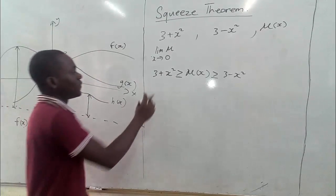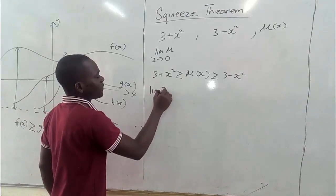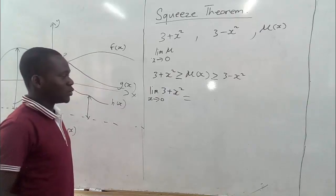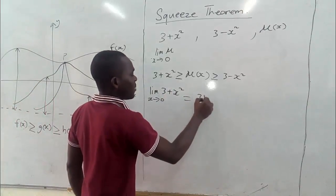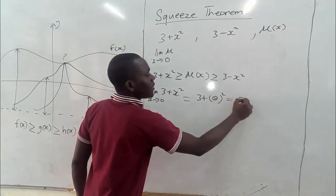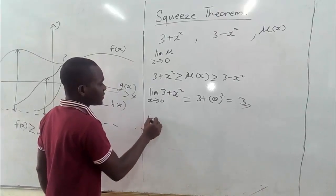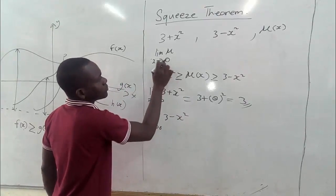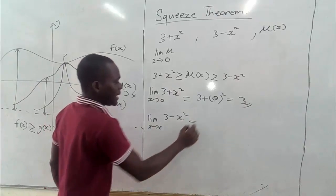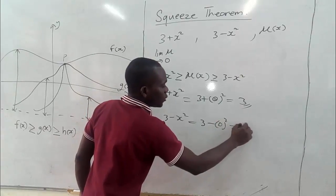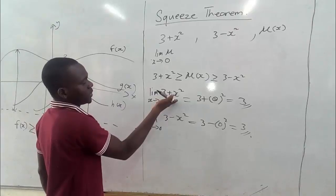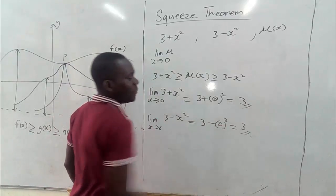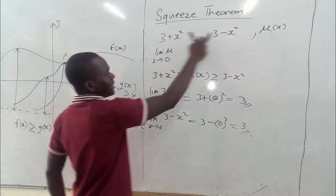The first thing we do is find the limit of the first function: the limit of three plus x squared as x approaches zero. Using direct substitution, we get three plus zero squared, which gives us three. Also taking the limit of three minus x squared as x approaches zero — using direct substitution you get three minus zero squared, which is also three. So the limit of three plus x squared and three minus x squared as x approaches zero both equal three.